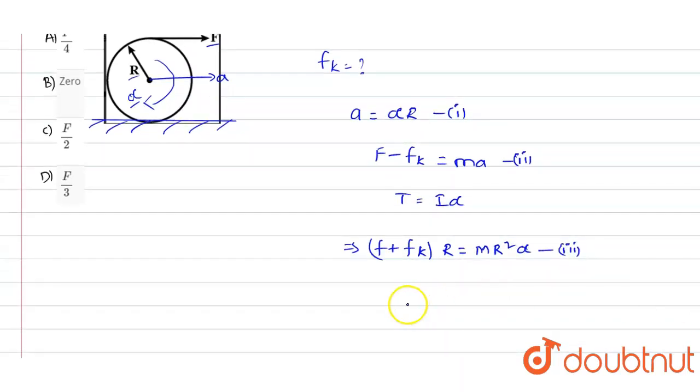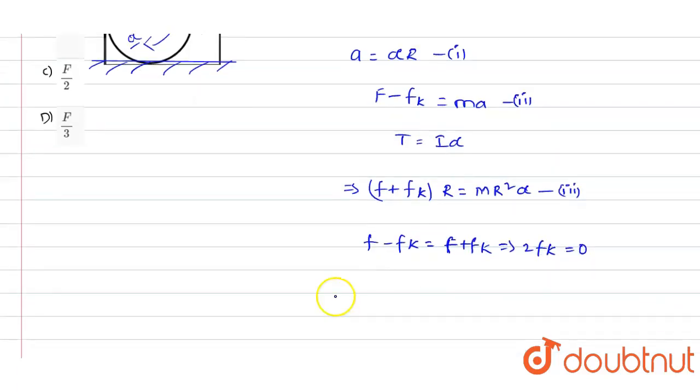Now from equation number one, two, and three, we get F minus fk is equals to F plus fk. So that will be equals to two fk, so that is equals to zero.